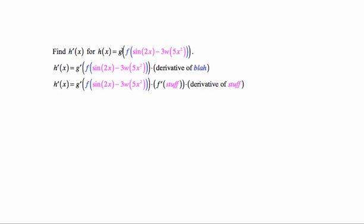So we start with g, so we get g prime of whatever, and then times the derivative of whatever. Whatever is f of something, so f prime of some new stuff, and then the derivative of stuff.